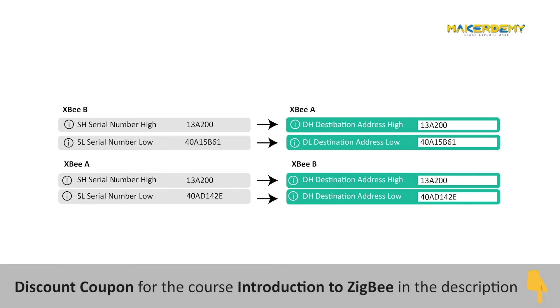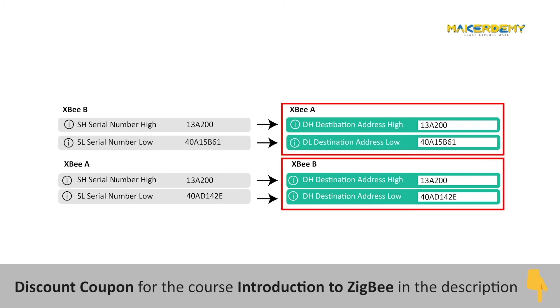For two XBee modules to communicate, the sending module needs the address of the recipient. When working in transparent mode, you must configure this address in the module that is communicating.